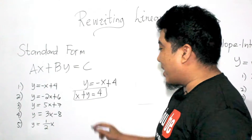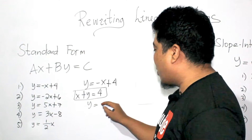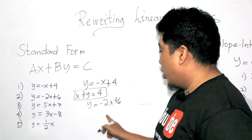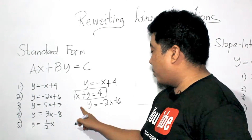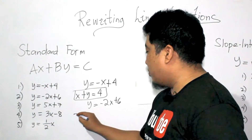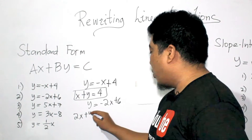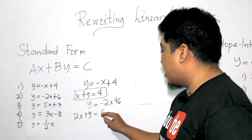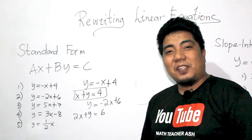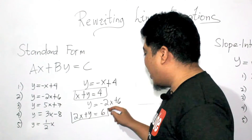For the second example, we have Y is equal to negative 2X plus 6. We transpose the negative 2X, and this becomes 2X plus Y is equal to positive 6. That is your final answer.